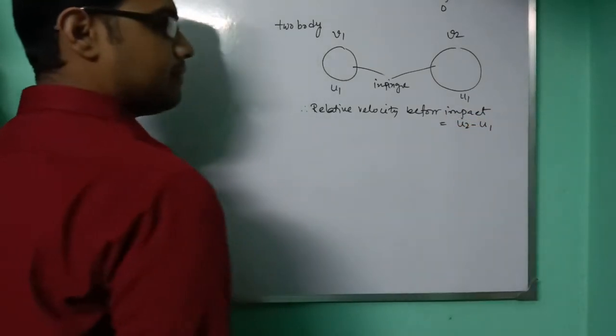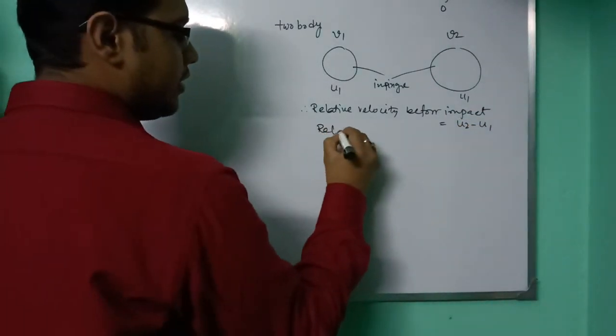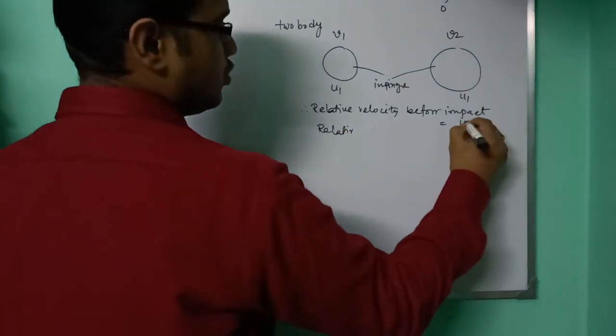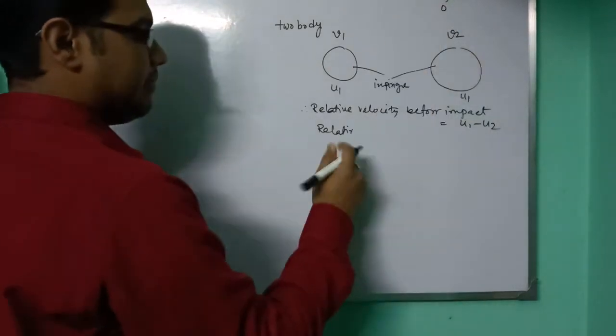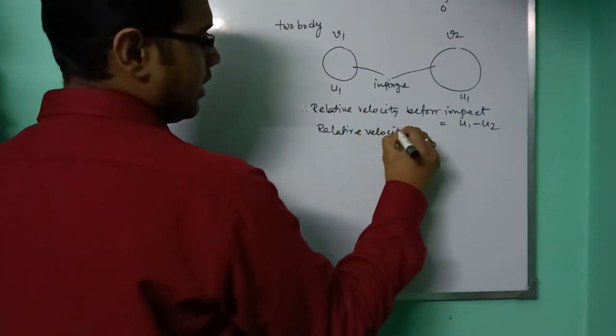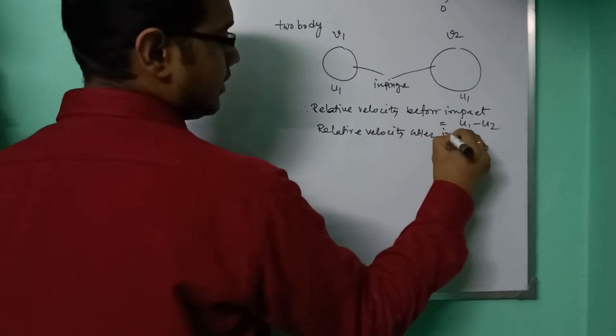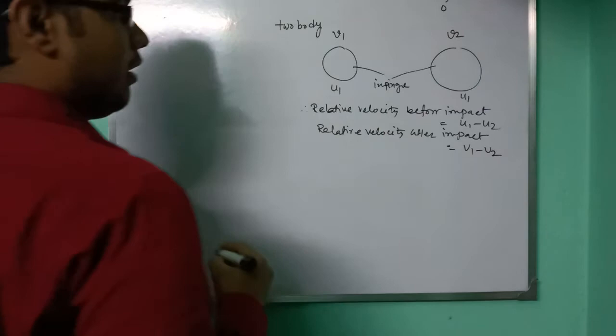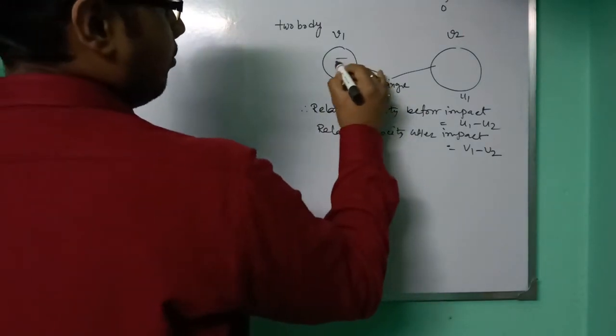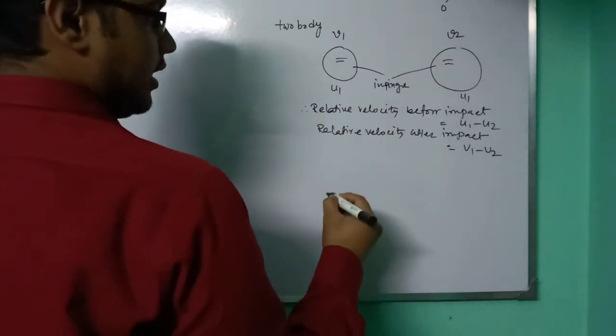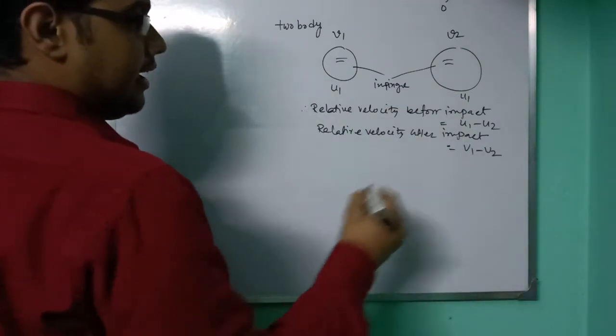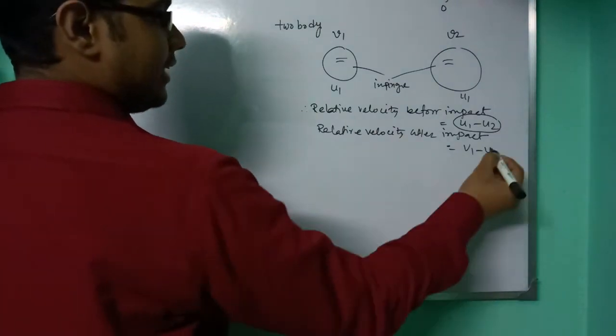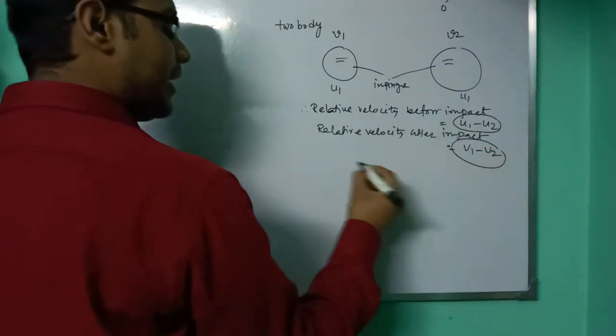The relative velocity before impact is u2 minus u1, and the relative velocity after impact is v1 minus v2. Both bodies are in opposite directions.